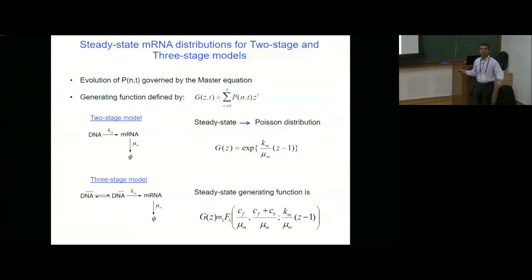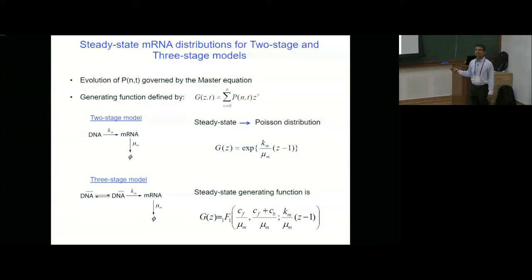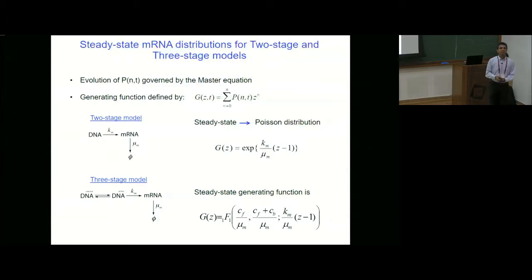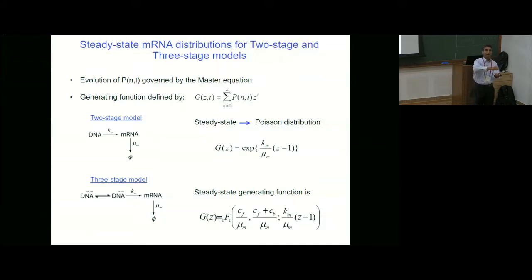The DNA is either active or inactive, which means the configuration of the DNA can change — that's called chromatin remodeling. If you have a closed configuration, then polymerase cannot access the promoter and cannot produce. You have to wait till it becomes open again to produce transcripts. In the model these transitions occur at constant rates, though in reality it's much more complicated. We know how to get mRNA distributions. But protein distributions, which are of great interest, we don't know how to get — even for the two-stage model — the exact closed-form expression for the distribution of proteins.